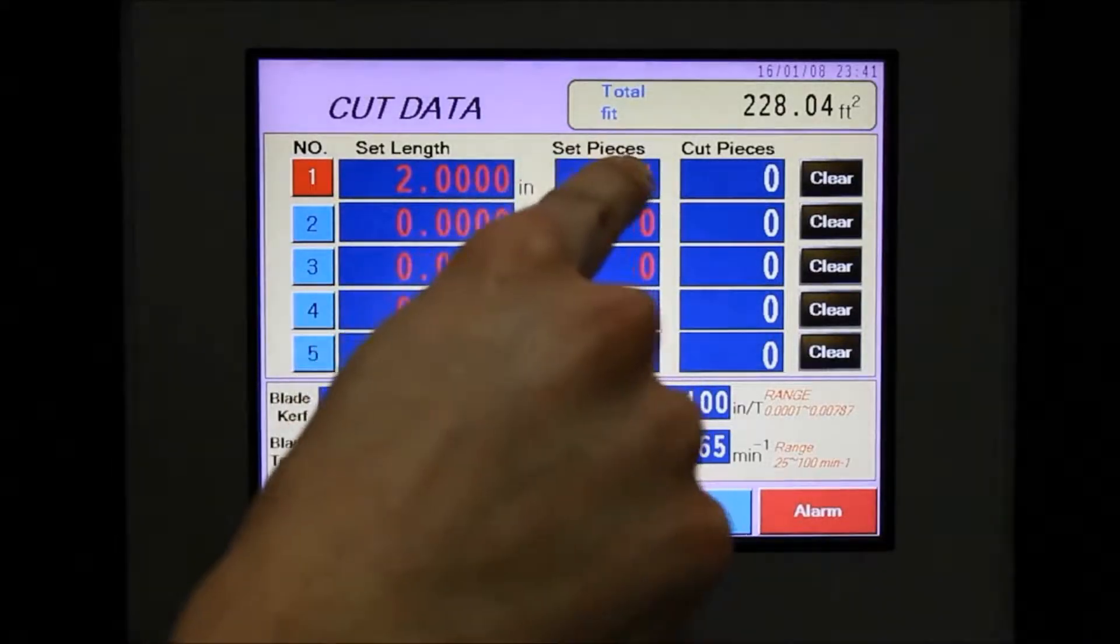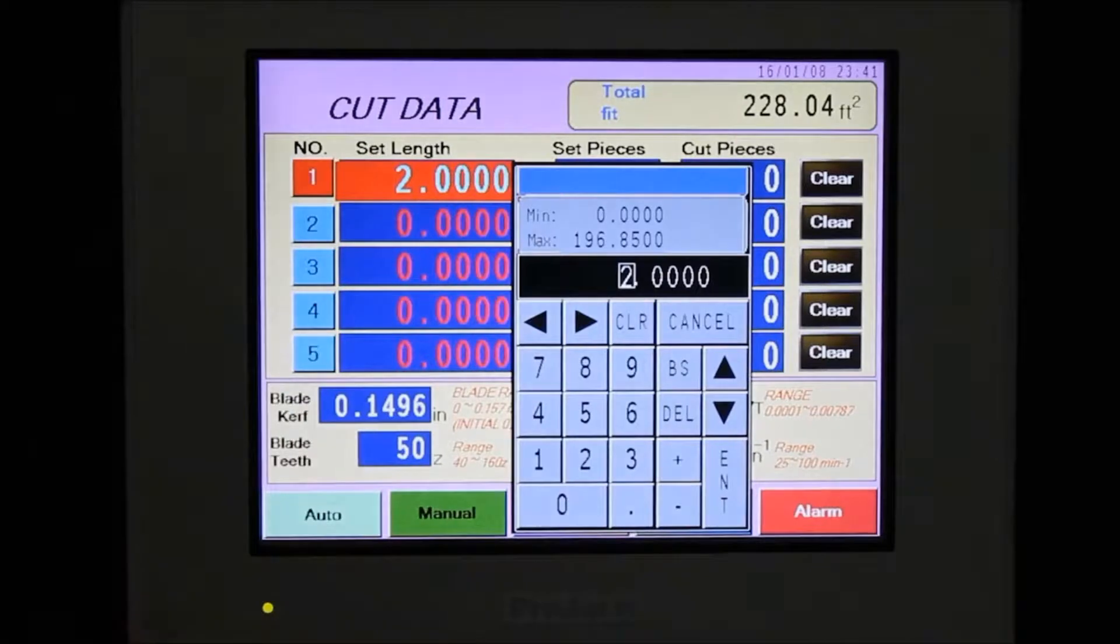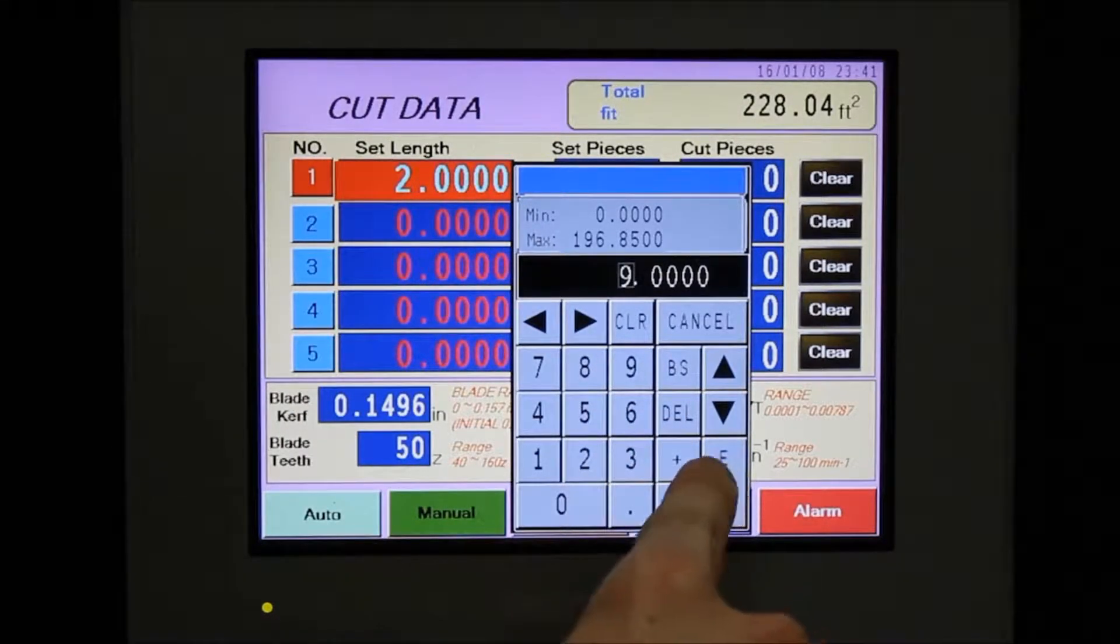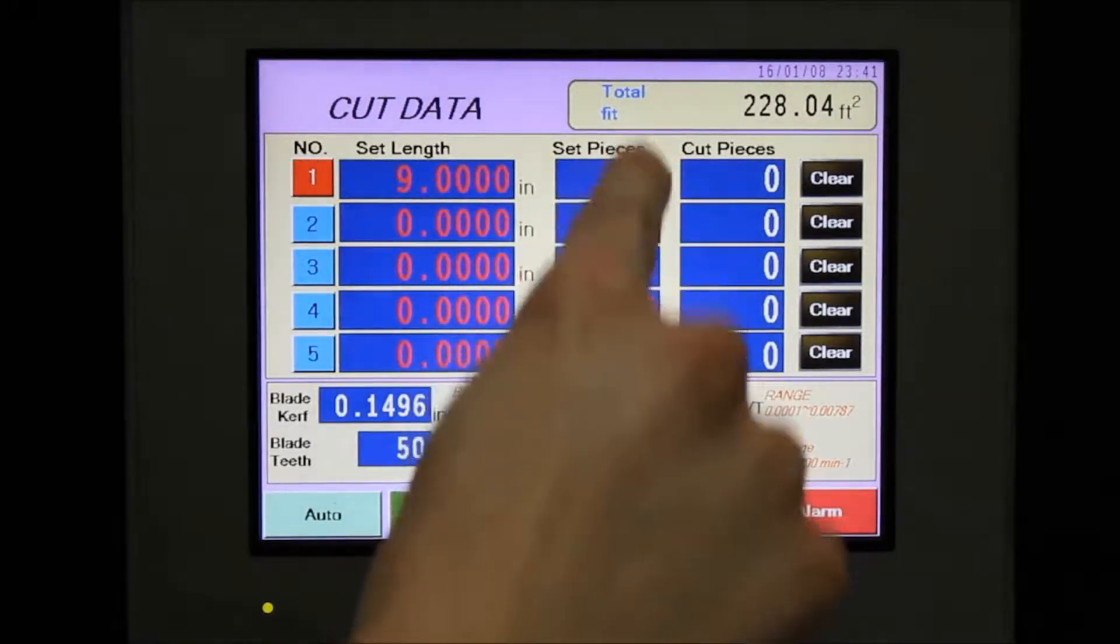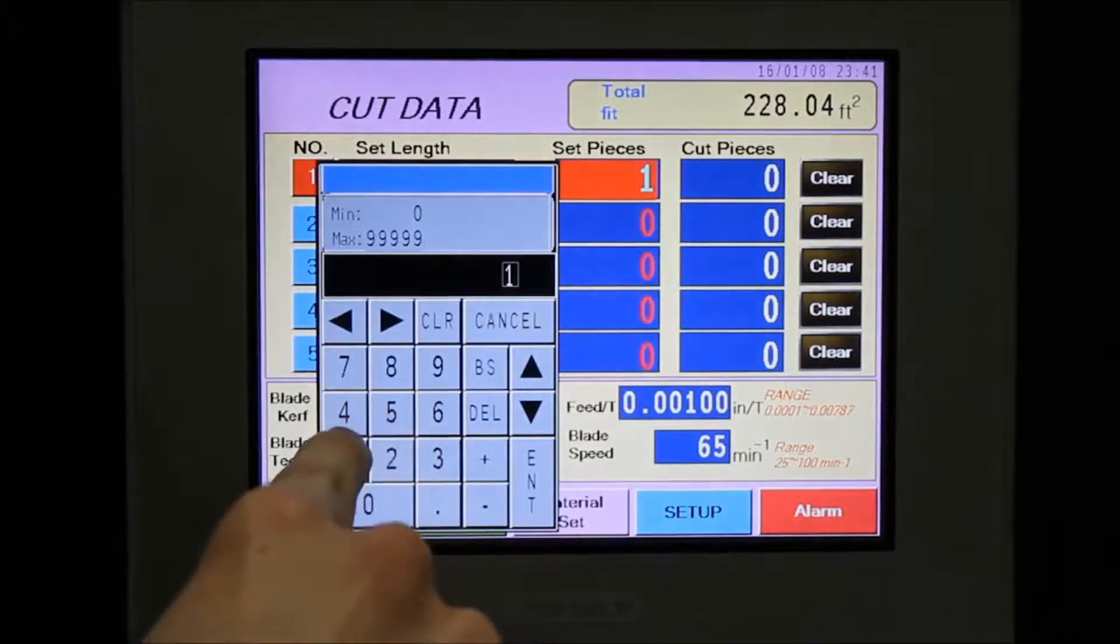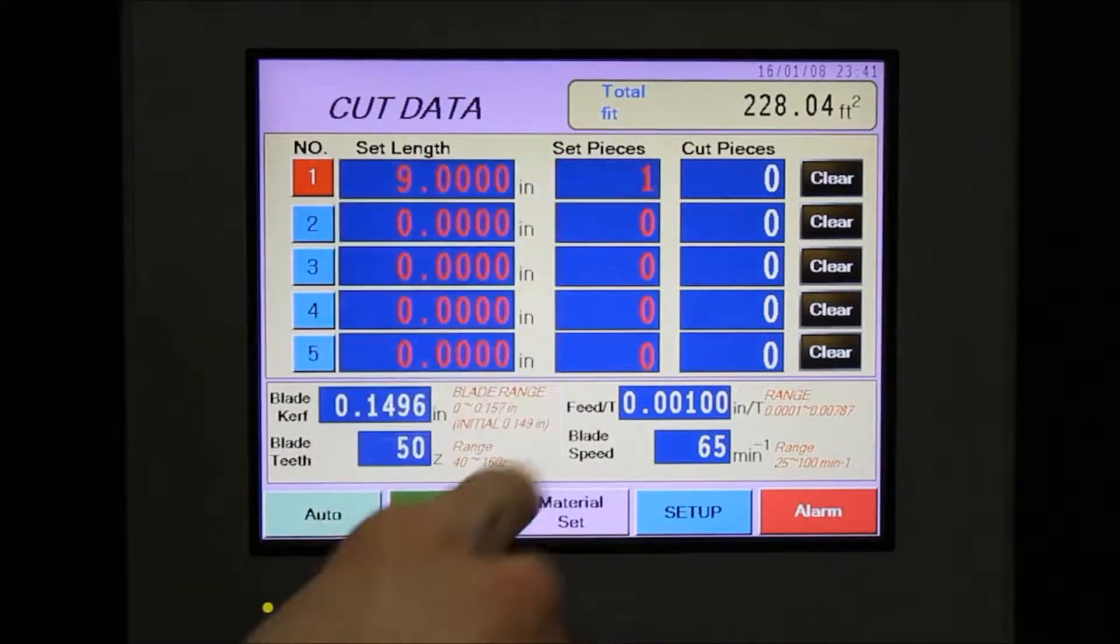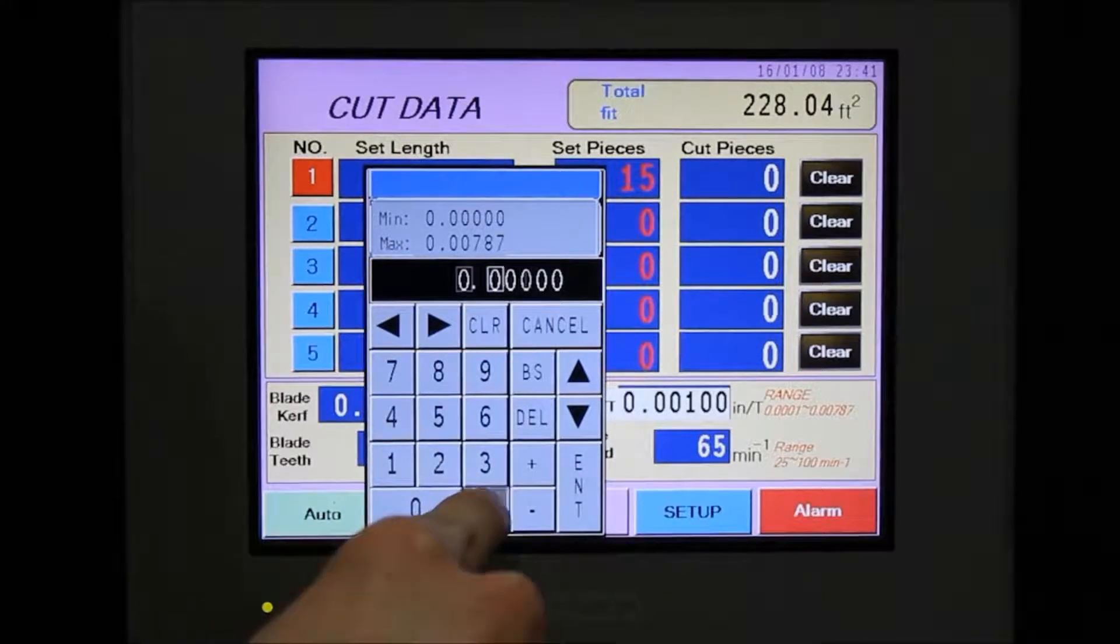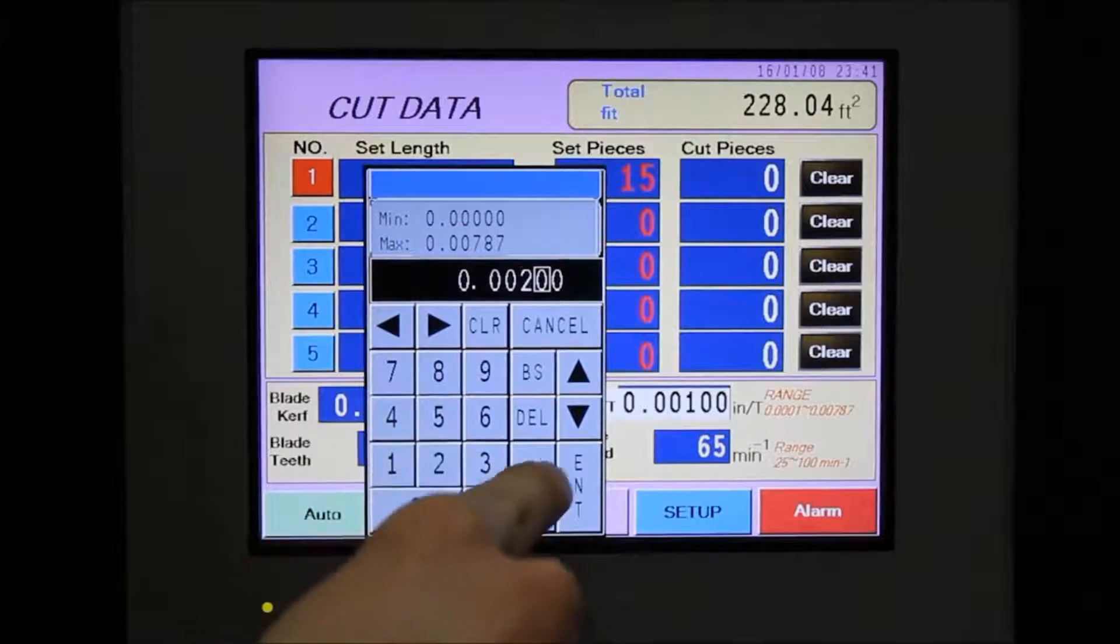Programming the CMB-230 is fast and simple. To program a production run, enter the length of material desired and the number of pieces to be cut. Additional cuts can also be entered for continuous processing. The feed rate and blade speed are then input. All numeric input is done with the on-screen numeric keypad.